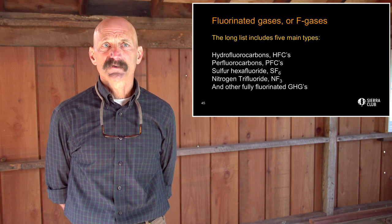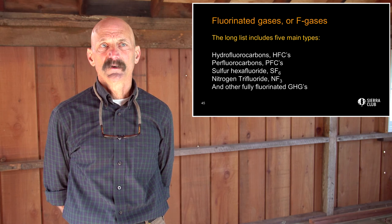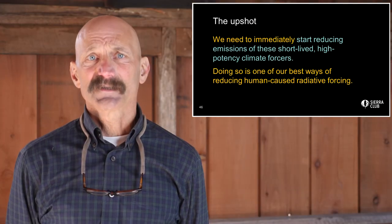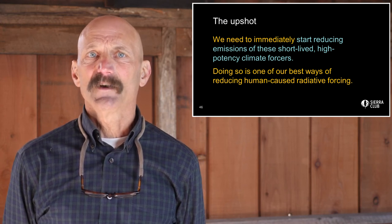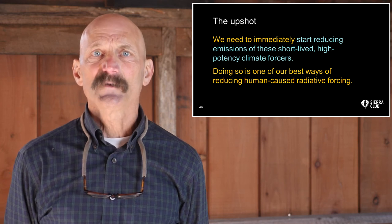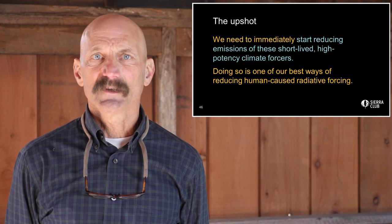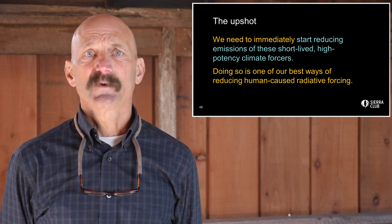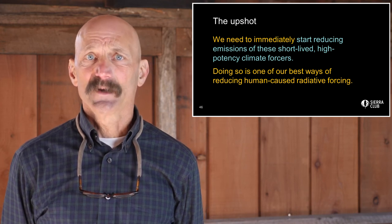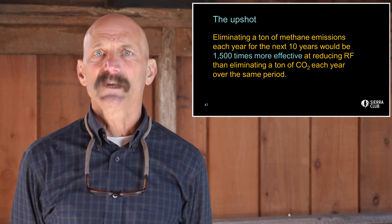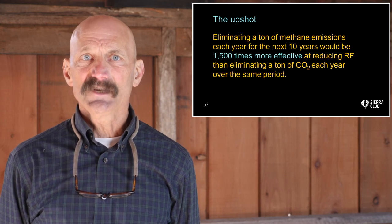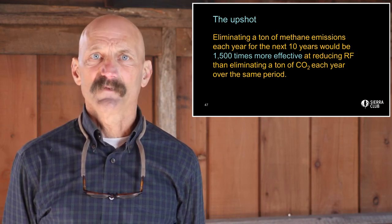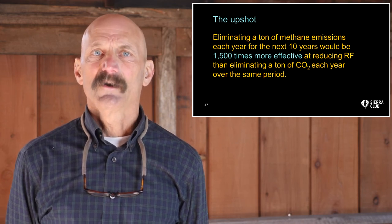Some of these short-lived climate forcers are thousands of times more potent than CO2 on a ton-for-ton basis. The upshot is this: while we reduce emissions of CO2 and other long-lived climate forcers, we also need to immediately start reducing emissions of these short-lived, high-potency climate forcers that have an outsized heat-trapping effect. Doing so represents one of our best ways of reducing total human-caused radiative forcing this decade. As an example, eliminating a ton of methane emissions each year for the next 10 years would be 1,500 times more effective at reducing radiative forcing than eliminating a ton of CO2 each year over the same period.